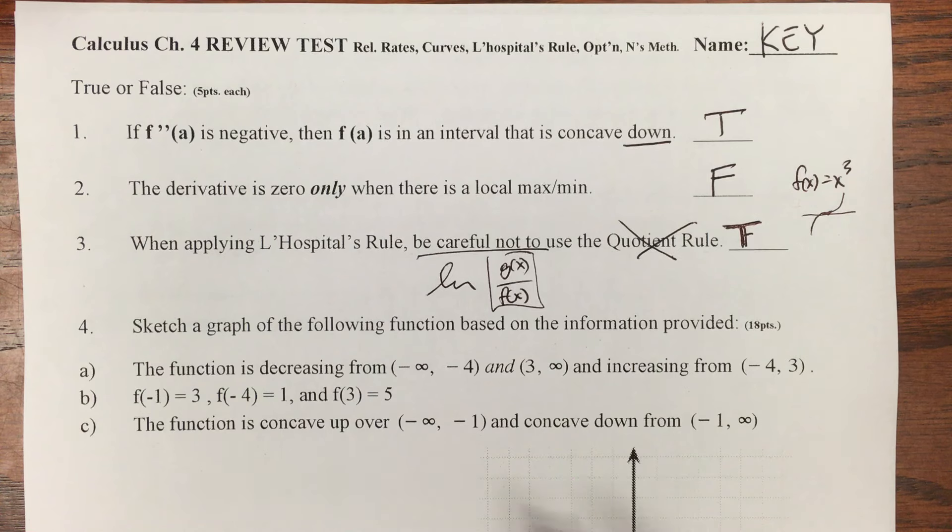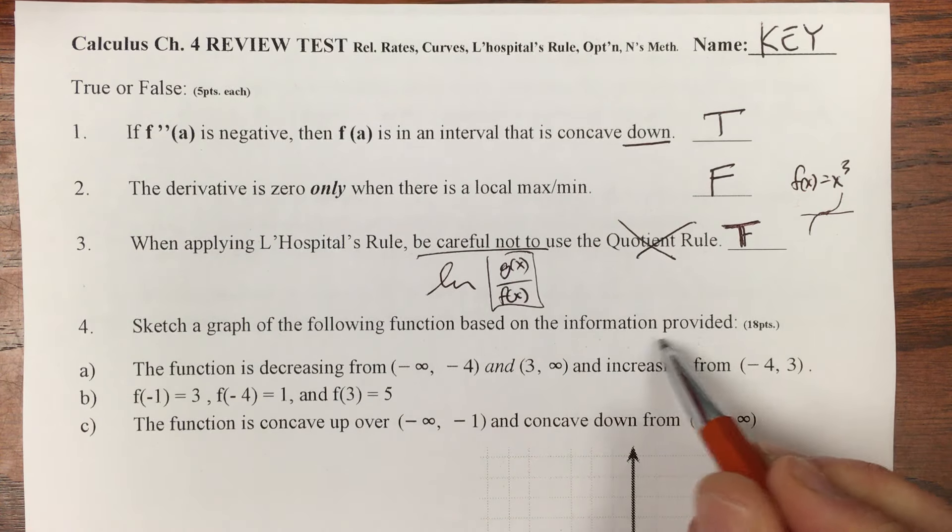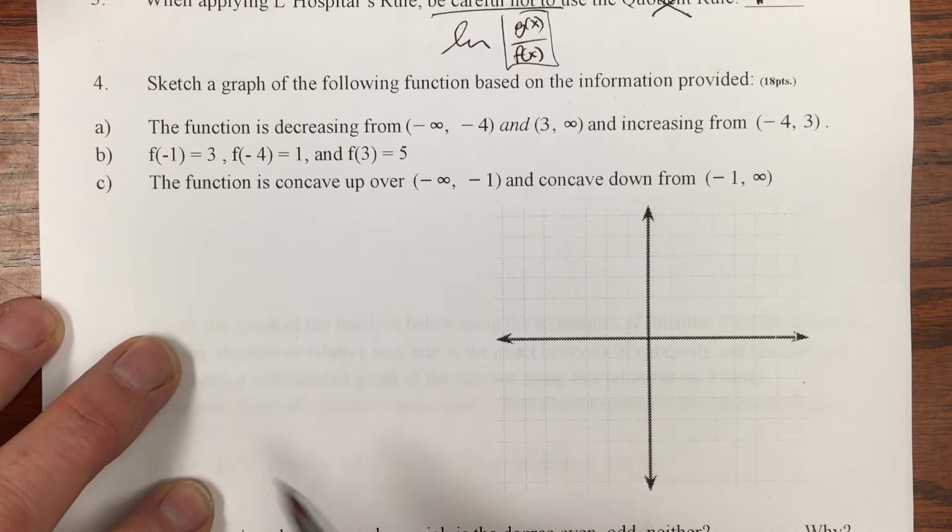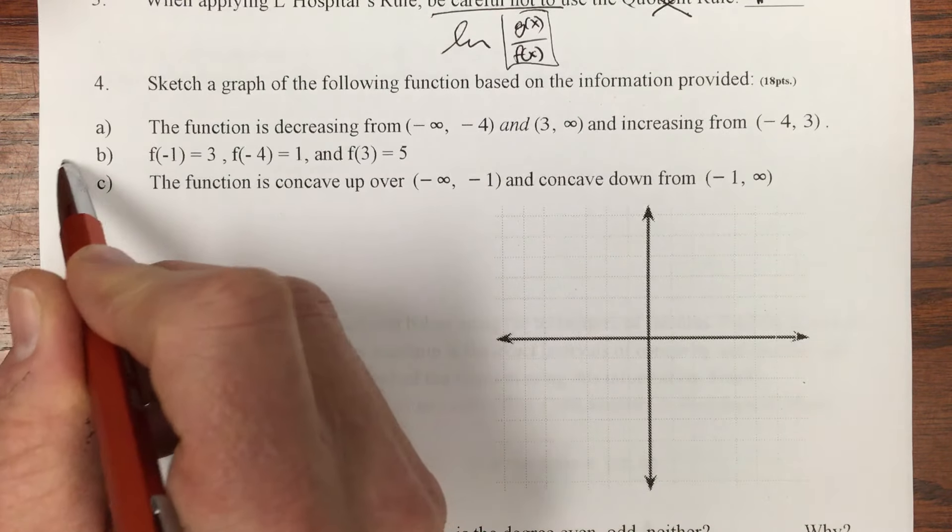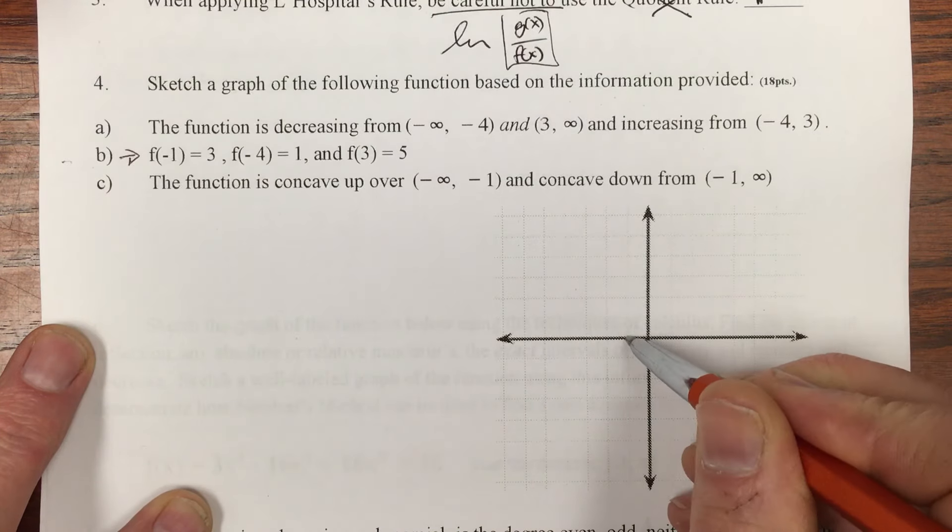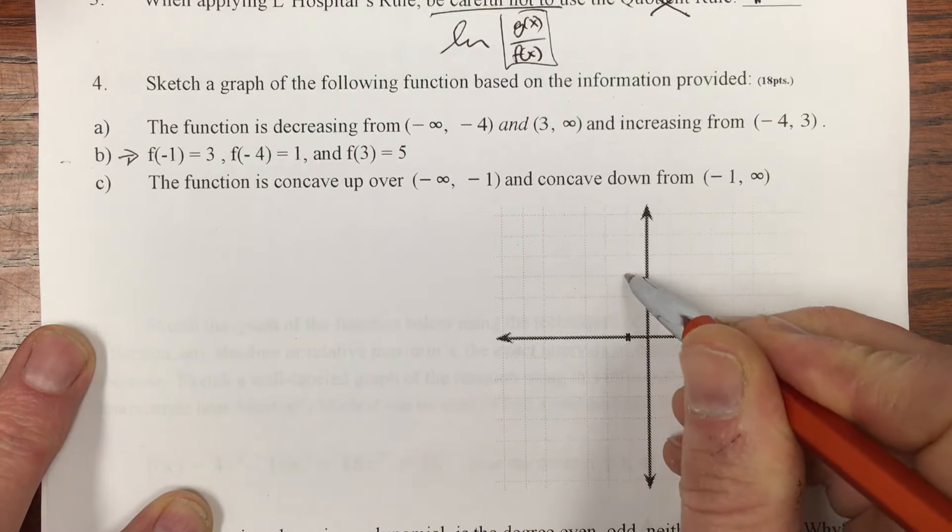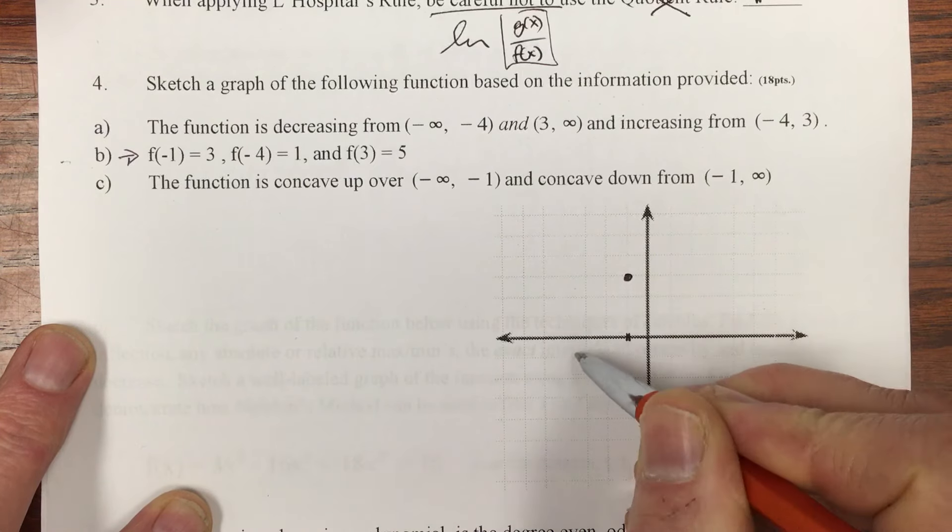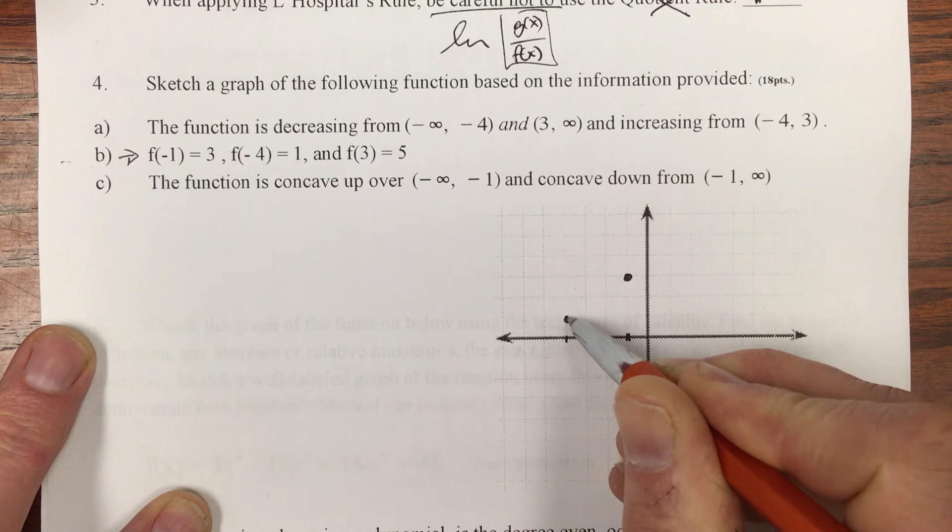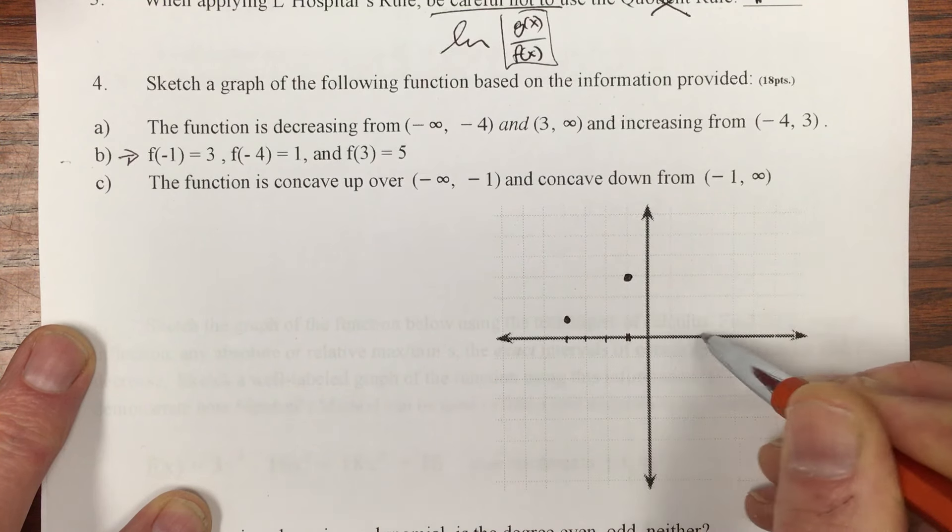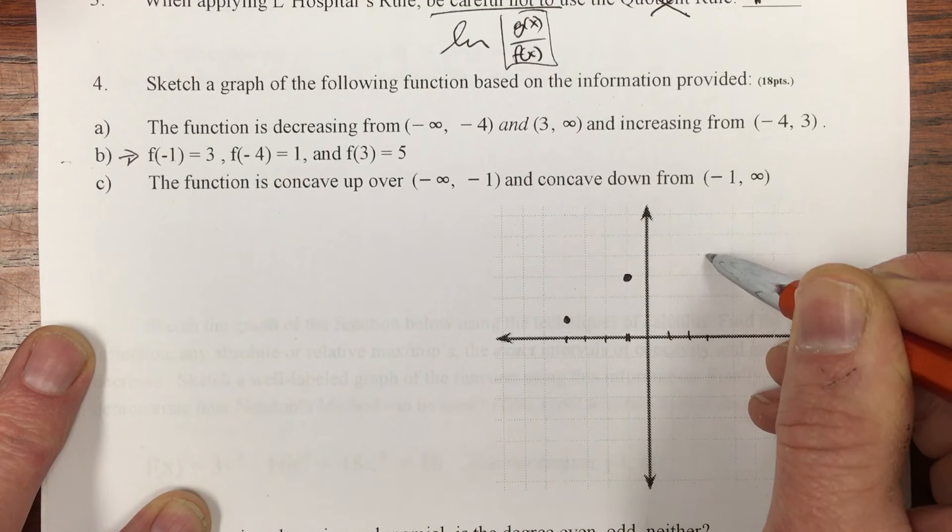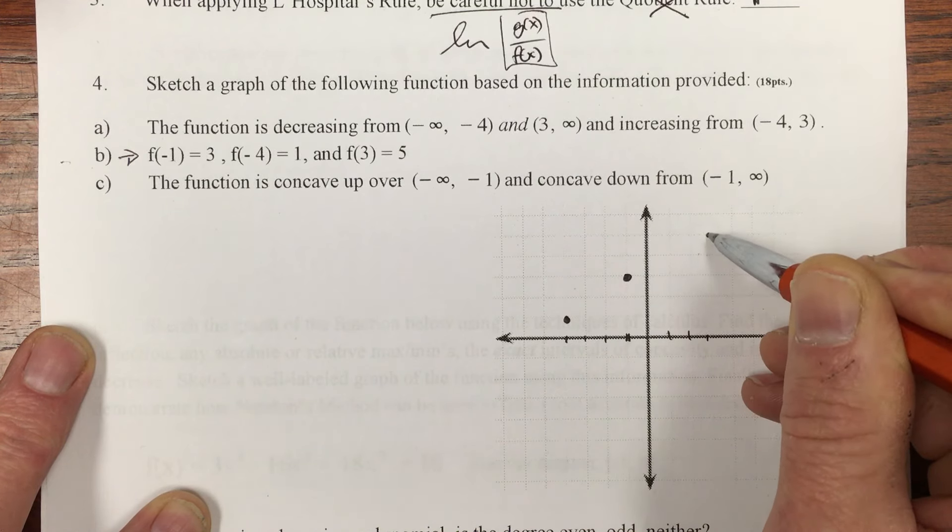Sketch the graph of the following function based on the information provided. All right, so the first thing to do is look at these values. These are good starting points. When you're at -1, you're at 3. When you're at -4, you're at 1. And when you are at 3, you're up here at 5.